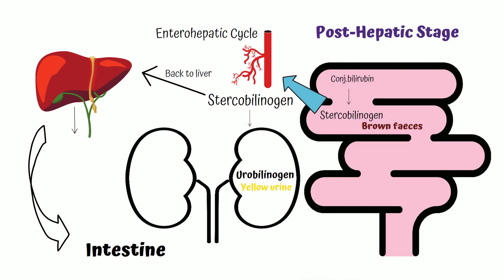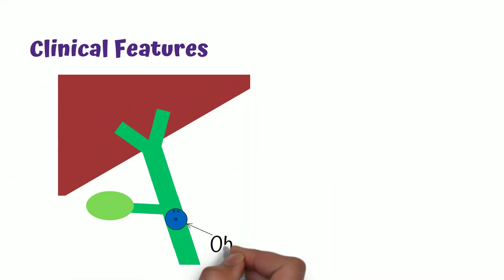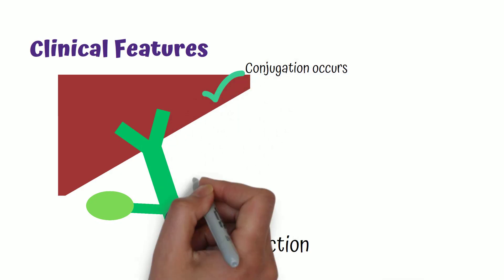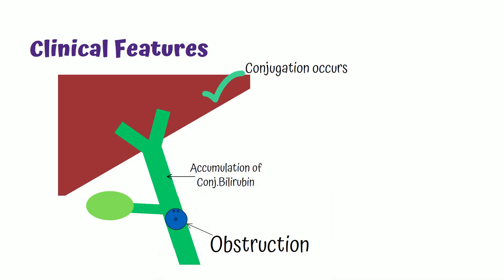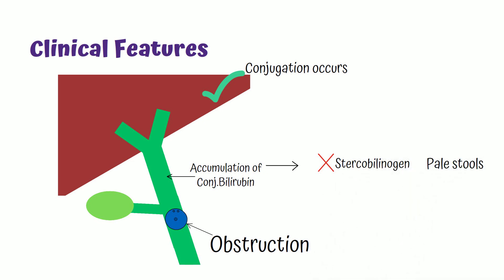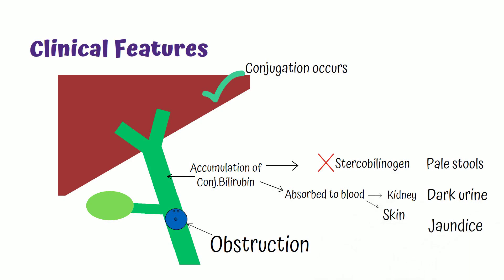Now, with a clear understanding of bilirubin metabolism, let's look at the clinical features in obstructive jaundice. When there is an obstruction in the bile duct, conjugation of bilirubin occurs normally because liver function is normal, but conjugated bilirubin accumulates in the bile ducts. Bilirubin cannot pass to the intestine, so the stools will be pale in color. The accumulated bilirubin is absorbed into the bloodstream and taken to the kidney, so the patient will have dark urine and deep jaundice.